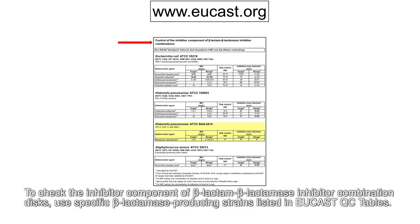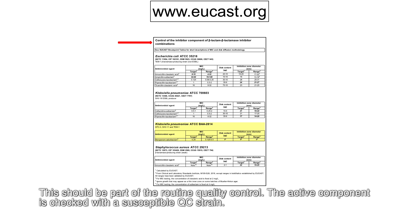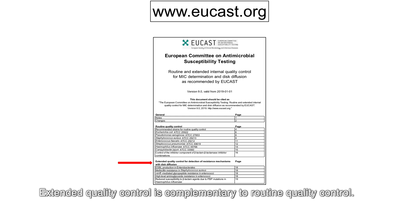To check the inhibitor component of beta-lactam and beta-lactamase inhibitor combination discs, use specific beta-lactamase-producing strains listed in EUCAST QC tables. This should be part of the routine quality control. The active component is checked with a susceptible QC strain.